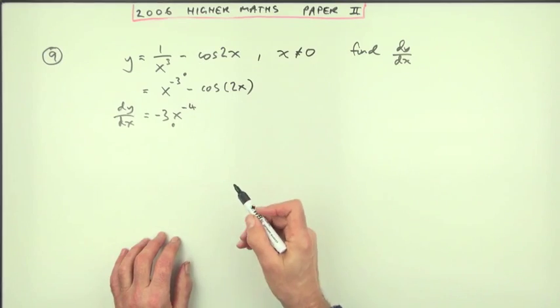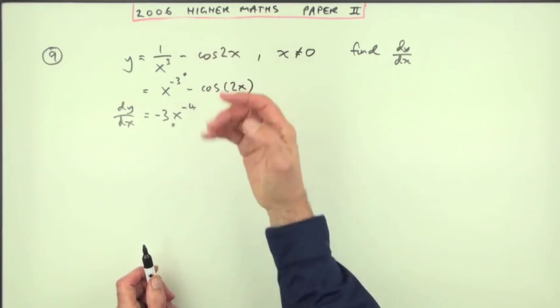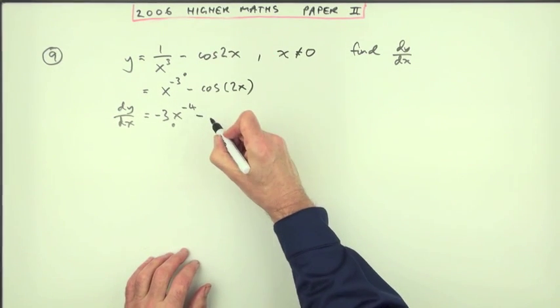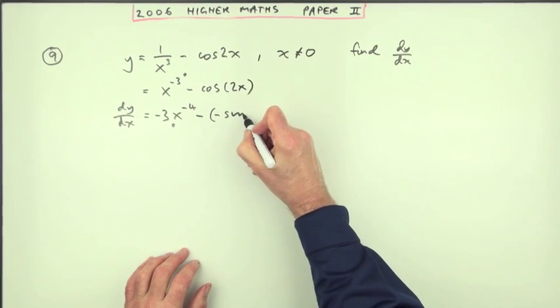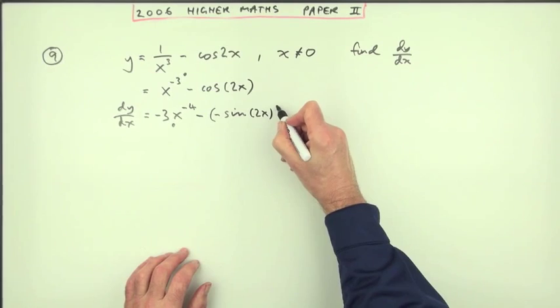Function of a function, differentiate it first of all by doing the outer function. Cos goes to negative sine. Maybe I'll just emphasize that. So subtract negative sine of whatever it's acting on, which is 2x.